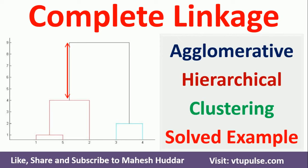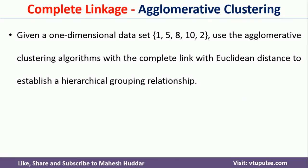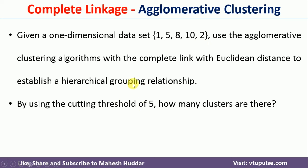In this video, I will discuss the Agglomerative Hierarchical Clustering Algorithm with Complete Linkage. We have been given a one-dimensional dataset with values 1, 5, 8, 10, and 2. We need to use the Agglomerative Clustering Algorithm with complete linkage along with Euclidean distance to form the clusters, and identify how many clusters we get if we set the threshold as 5.